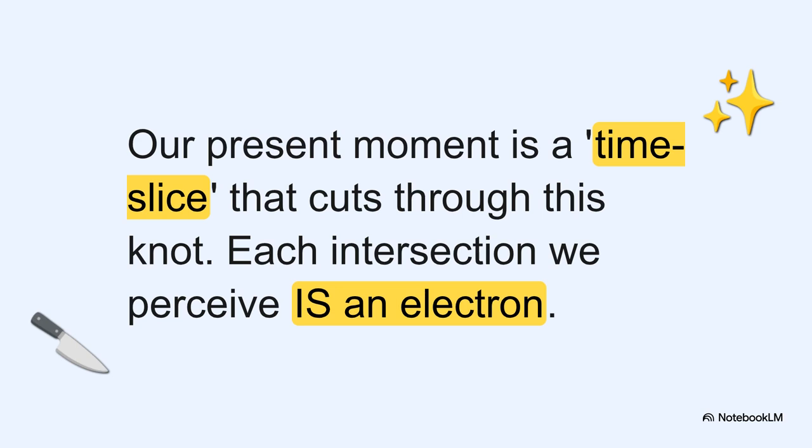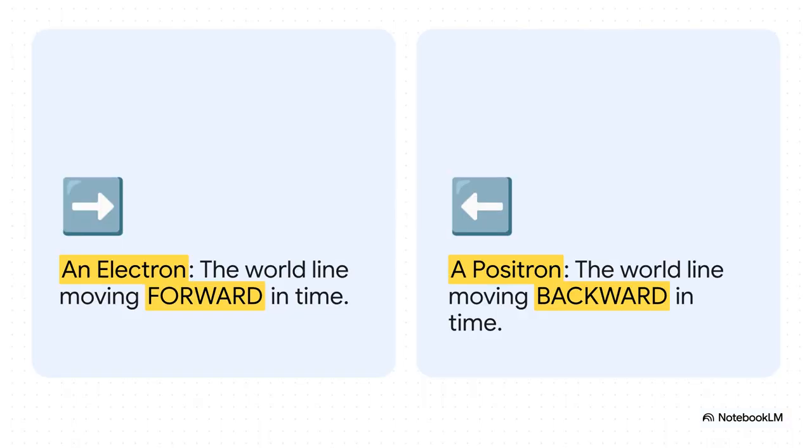So where are all the other electrons we see? Well, they're basically an illusion created by our perspective. Imagine our present moment, right now, is like a flat sheet of paper. And imagine that tangled ball of yarn is the electron's worldline. If you slice that paper through the ball of yarn, what do you see? You see thousands, millions, of little dots where the yarn punches through. Each one of those intersections, that's an electron. One single line, creating countless particles at any given moment.